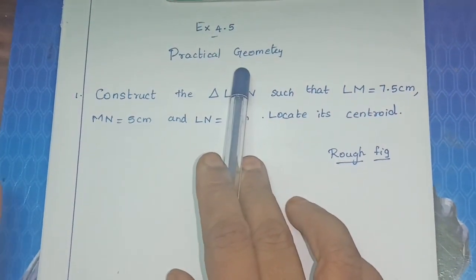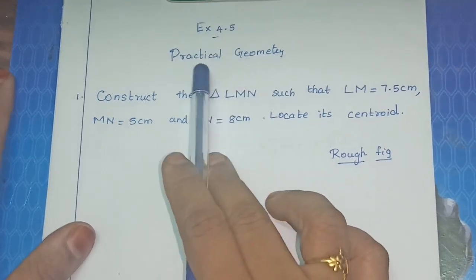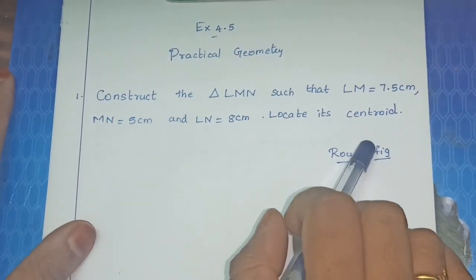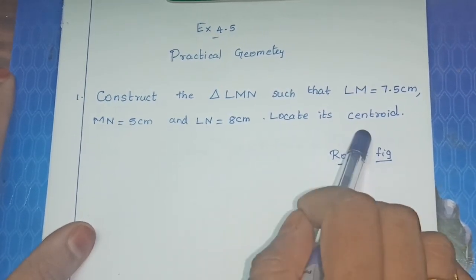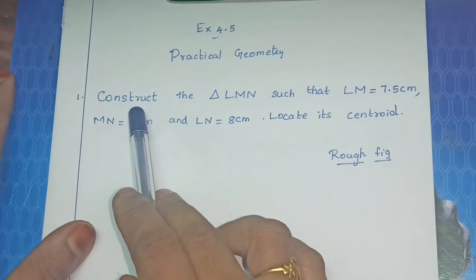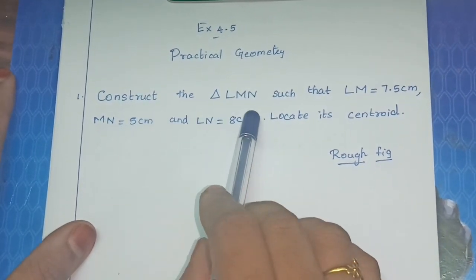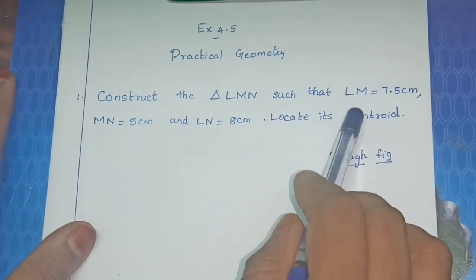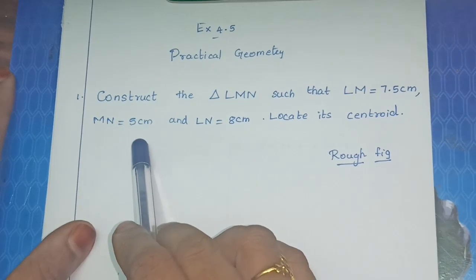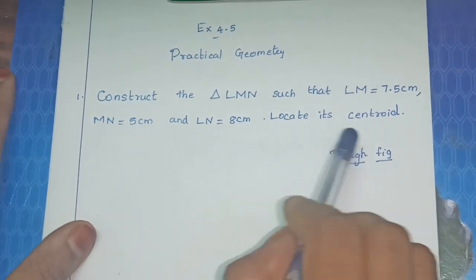Exercise 4.5, 9th Standard, Practical Geometry. This is construction of centroid. The question is: first question, construct the triangle LMN such that LM is equal to 7.5 cm, MN is equal to 5 cm and LN is equal to 8 cm. Locate the centroid.